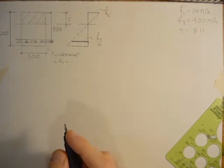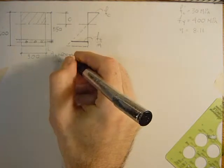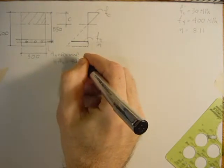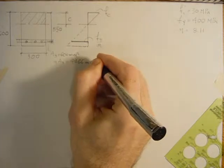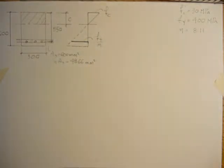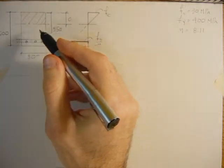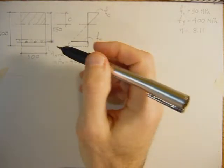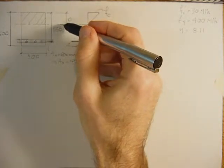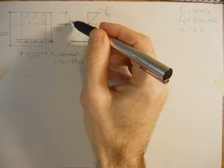So let's work out the neutral axis and use static moments. We'll take moments about the neutral axis, which is an unknown, C in this case.